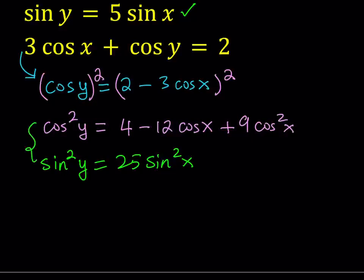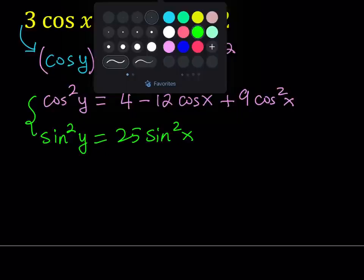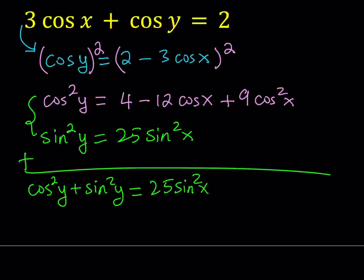Now, we're going to take a look at these two equations. We have cosine squared y on one side and sine squared y — they're both on the left-hand side, but in different equations. So what we can do is add these two equations side by side. On the left-hand side, I'm getting cosine squared y plus sine squared y. On the right-hand side, I have 25 sine squared x plus 9 cosine squared x minus 12 cosine x plus 4.